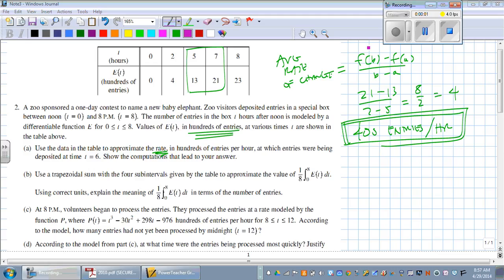For Part B, we're asked to use a trapezoidal sum with four subintervals given by the table to approximate the value of 1/8 times the definite integral from 0 to 8 of E(t)dt. Using correct units, explain the meaning of 1/8 times the definite integral from 0 to 8 of E(t)dt in terms of the number of entries.